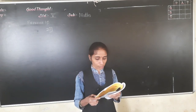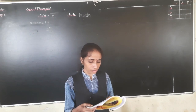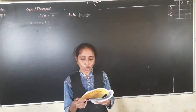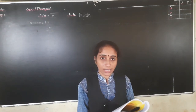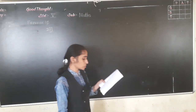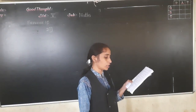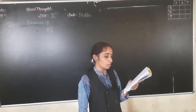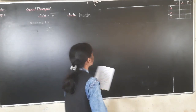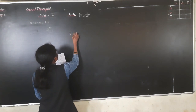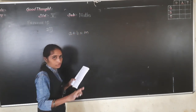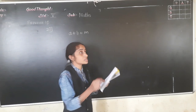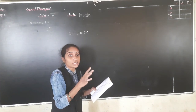Now we will solve question number 21. For questions 21 to 24, we have to state in words the general rule. The rule is given as an equation and we have to write it in words. Question 21: if A and B are odd numbers and M is an even number, then A + B = M.